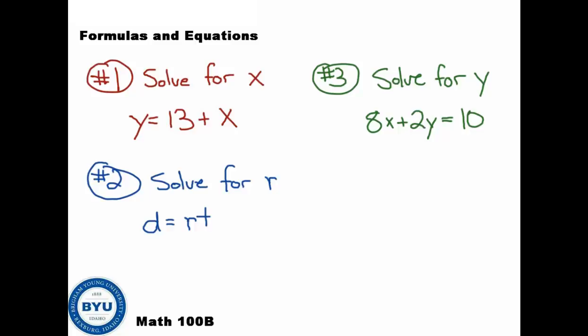Okay, let's take a look on number 1. You should have done the law of opposites. So the opposite of plus 13 would be minus 13 to both sides. So when you minus 13 to both sides, you get y minus 13. And that would equal x. And notice that now, we have x by itself. And so that would simply be our answer, x equals y minus 13.